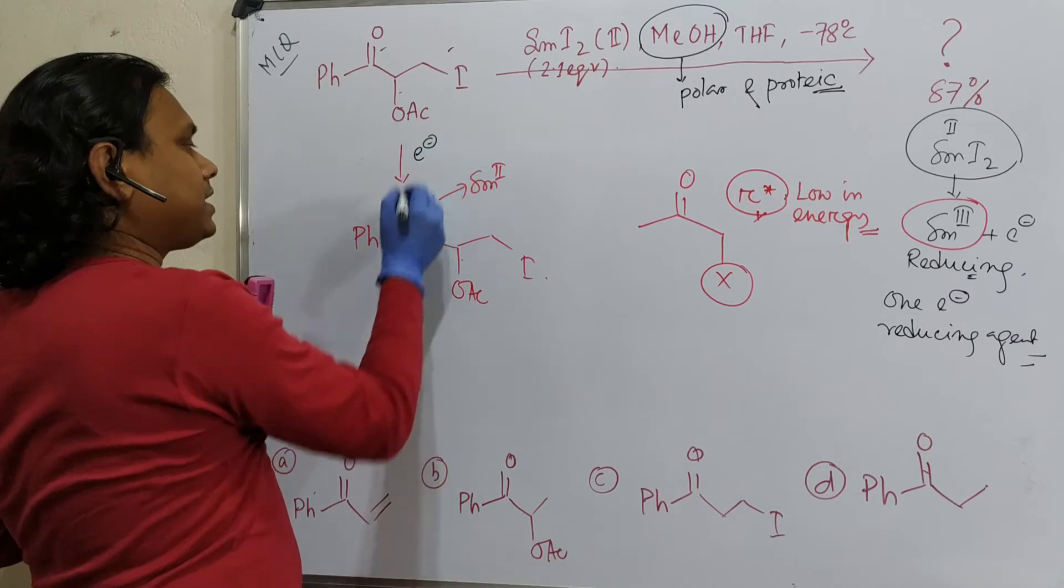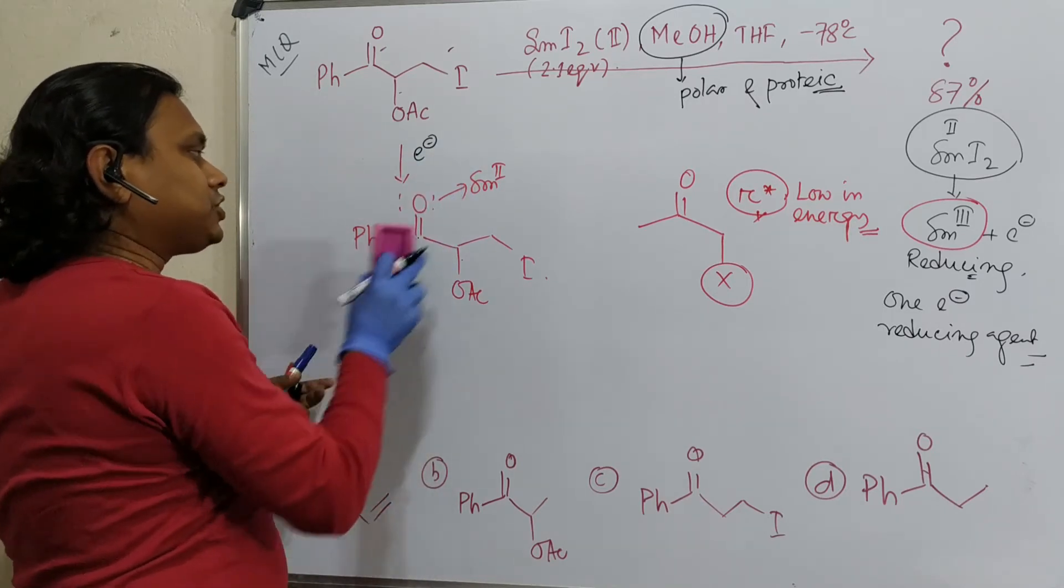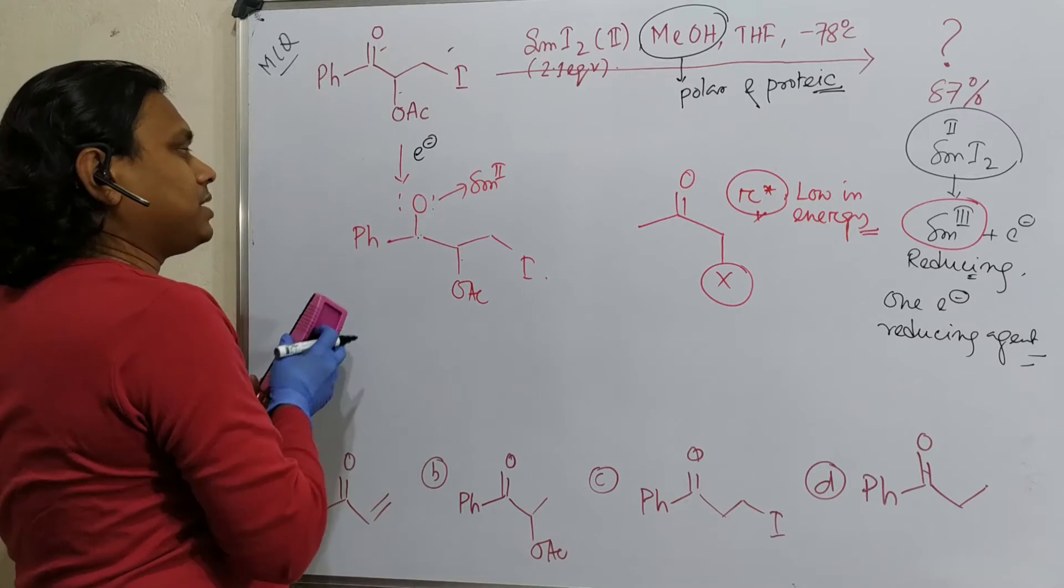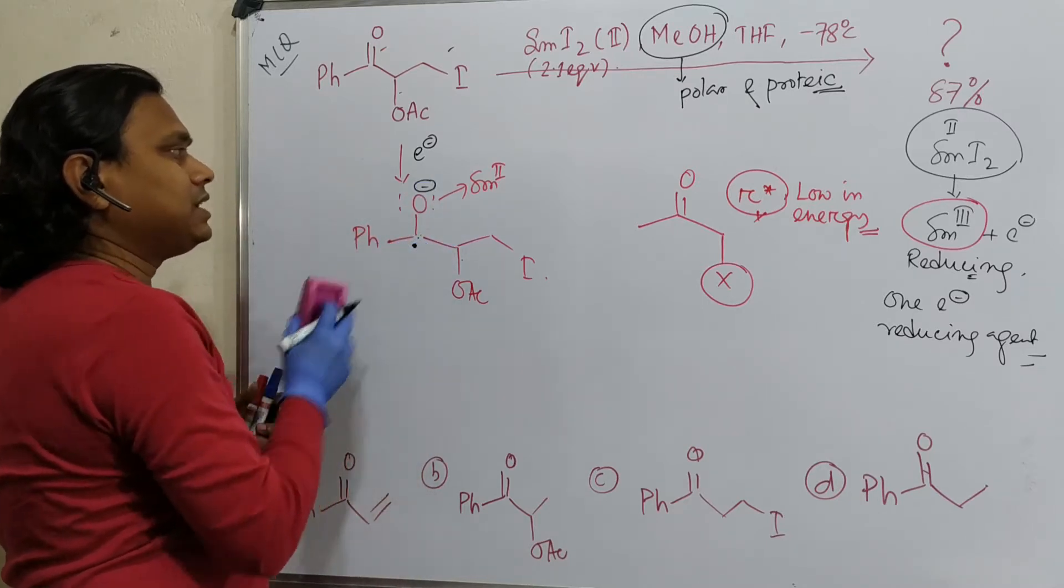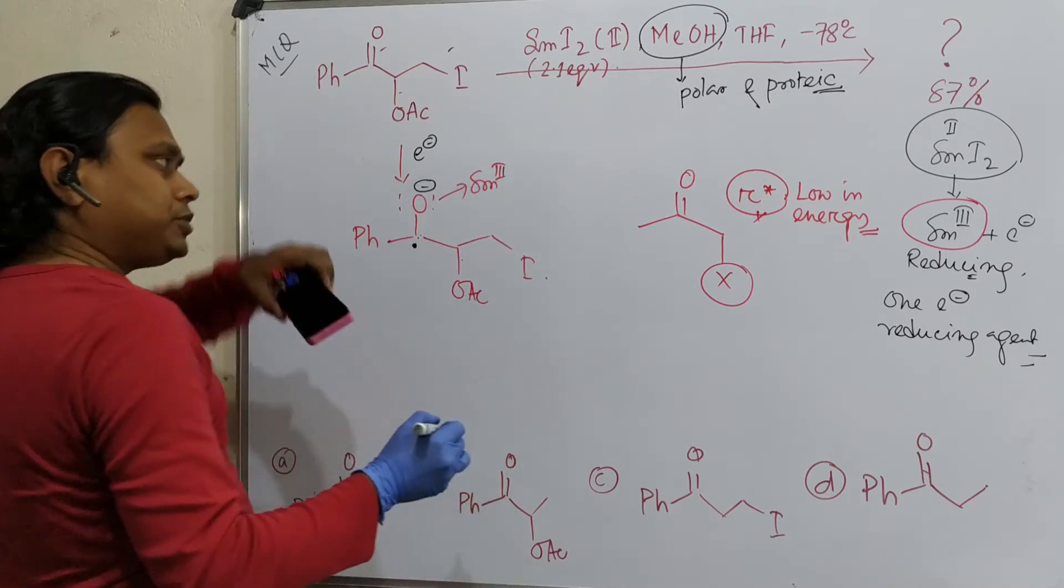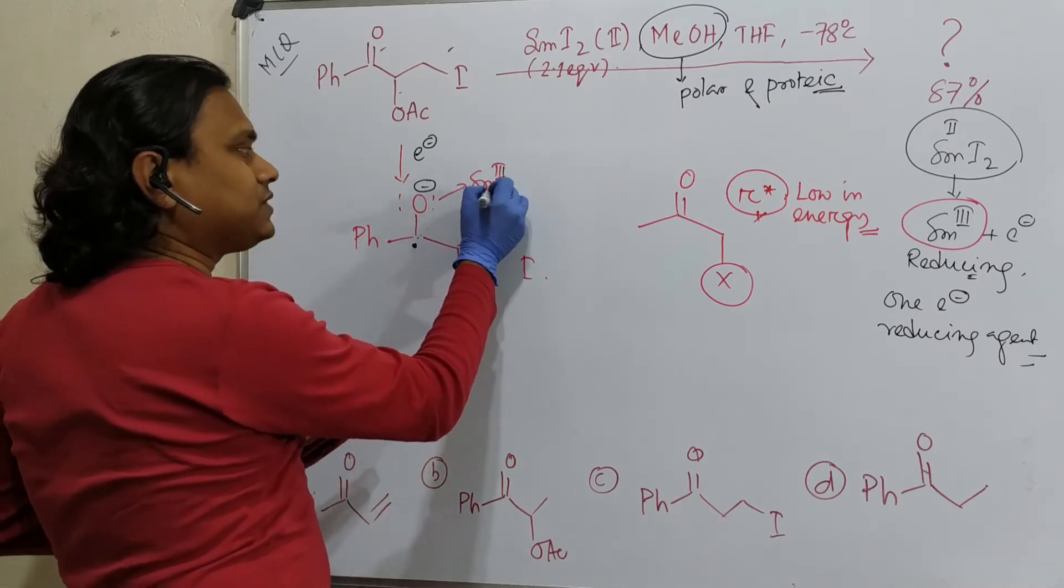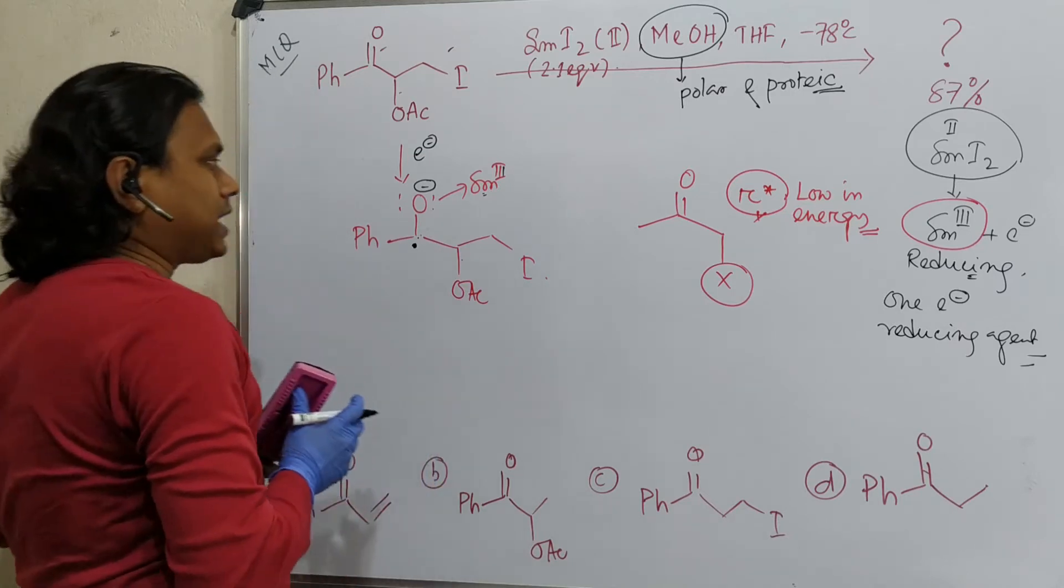We'll understand after some time. So after giving one electron, this electron gets attached here. So after attachment, what happens? This opens up. It becomes minus and it becomes a radical. And this samarium is samarium 3+. This is stabilized because of this coordination.